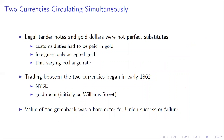So you have these two types of dollars: legal tender notes and gold — called lawful money or coin. Legal tender notes in the language of the time were called lawful money. Gold dollars were called coin, and they're not perfect substitutes. Customs duties have to be paid in gold, and foreigners are only going to accept payment in gold.